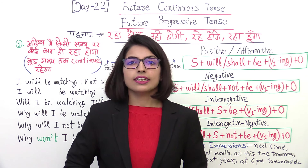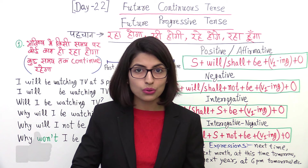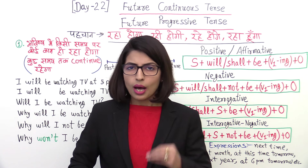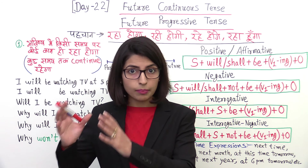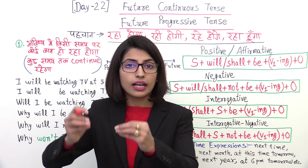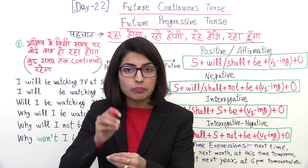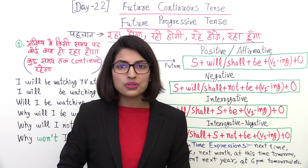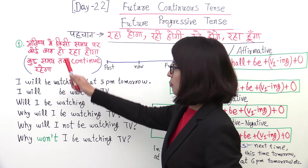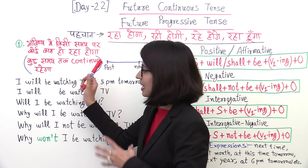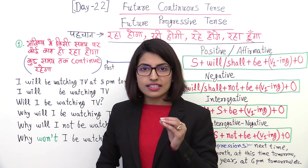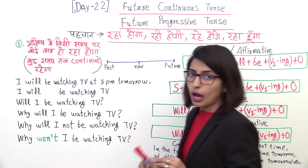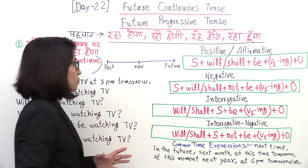So guys, first let's talk about when we use Continuous Tense — when an action starts and continues for some time. Now since we are talking about Future Continuous, in the future at some point in time, an action will be continuing — meaning you are in the middle of that action. The action started at one time and will go on until another time, and right now you are in the middle of it. The identification of such sentences is that at the end of the sentence you will find words like: raha hooga, rahi hoogi, rahe hoongi, or raha hoonga.